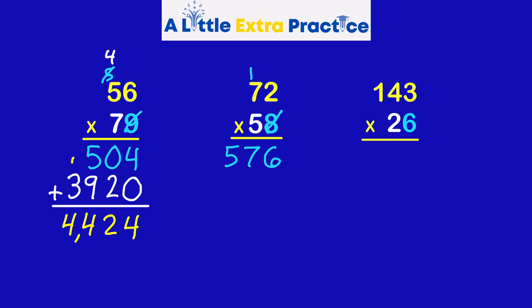I'm done with the 8. Also done with this 1. 72 times 50. So I'll write a 0 down here. 5 times 2 is 10. Carry the 1.